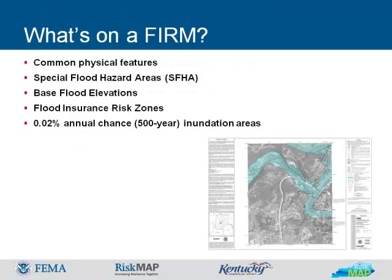Features on a flood insurance rate map include common physical features such as major highways, secondary roads, lakes, railroads, streams, and other waterways; special flood hazard areas, or SFHAs, also known as flood zones; base flood elevations, BFEs, or depths; flood insurance risk zones such as A, AE, and X; and areas subject to inundation by the 0.2% chance, or 500-year flood, in Zone AEs only.